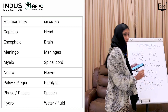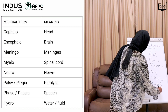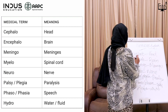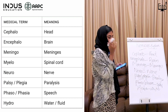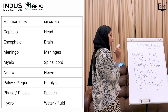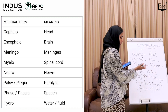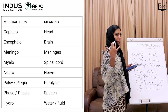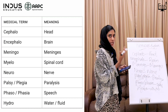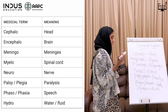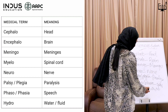To summarize the terminology: Cephalo is Head, Encephalo is Brain, Meningo is Meninges, Neuro is Nerve, Plegia is Paralysis — such as Hemiplegia — Dysphasia relates to speech, and Hydro means water, as in hydrocephalus.